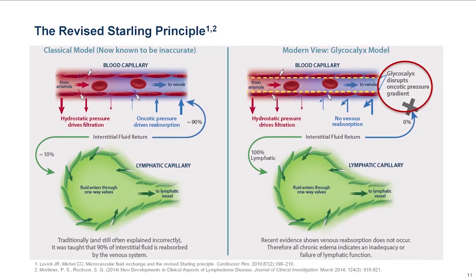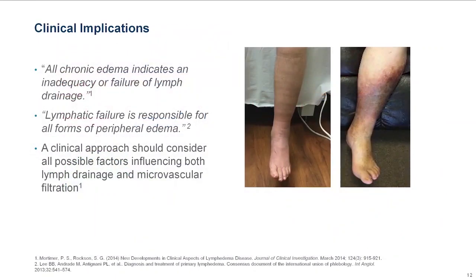In the revised Starling principle, we note that the glycocalyx prevents reabsorption of lymphatic fluid into the vein, and now we recognize that 100% of all lymphatic fluid must enter the lymphatics to be returned to the venous system. As described by Michael, Mortimer, and Roxen, all chronic lymphedema indicates an inadequacy or failure of lymphatic drainage. This has significant implications for treatment — we must address both the lymphatic and the venous disease to achieve maximal patient outcomes.